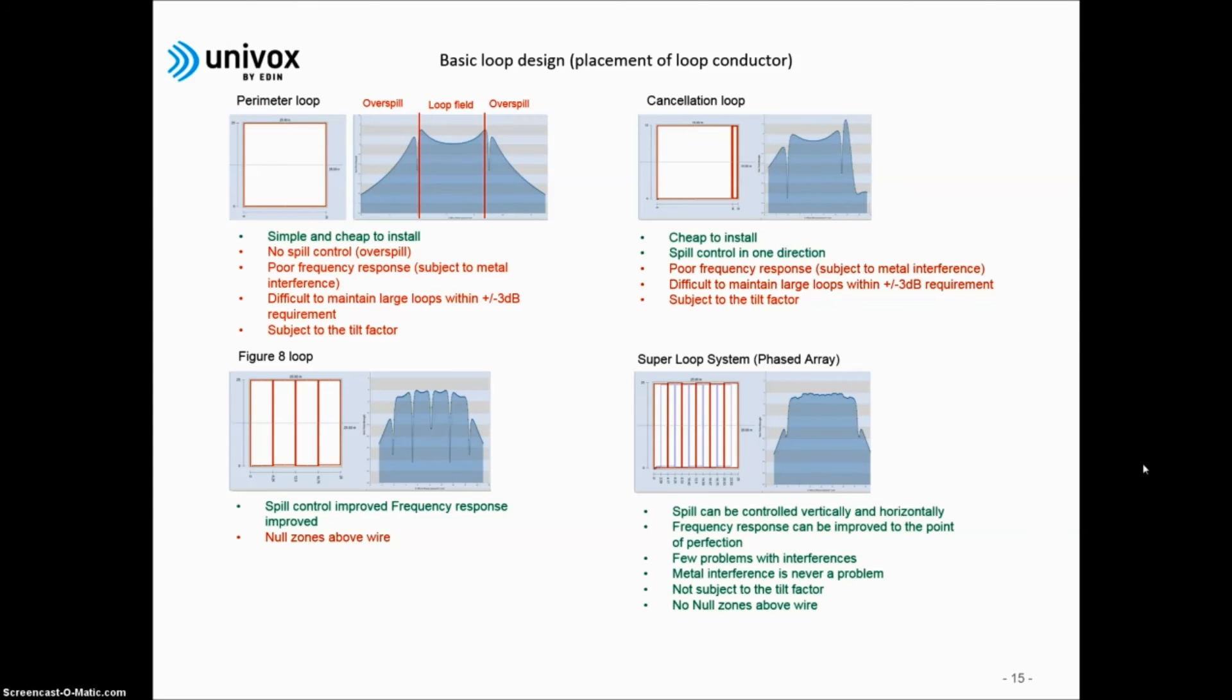The other design at the top is called a cancellation loop. It works the same way as a perimeter loop in all aspects, except that the overspill can be limited in one dimension. It is achieved by the two turn narrow segment, which will form a field of its own, and hold back the overspill from the main loop. The two turn loop corridor is generated from twice the current that of the rest of the loop. So, although smaller, the field generated is stronger. I like to think of it as a wall that holds back the main field to spill over.